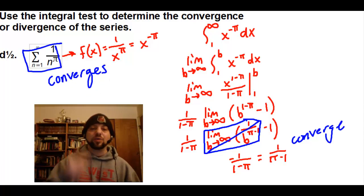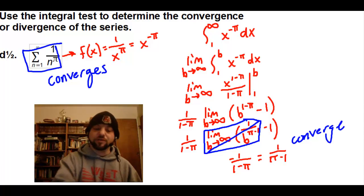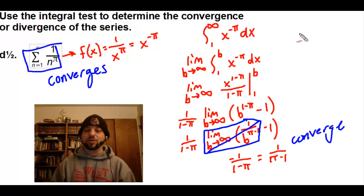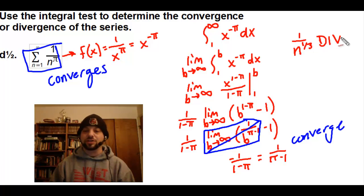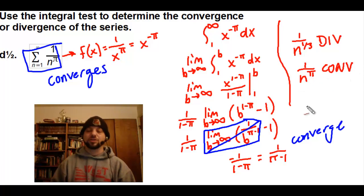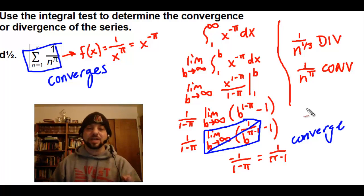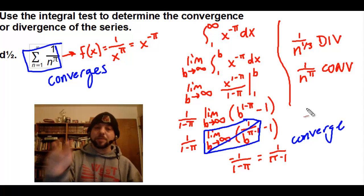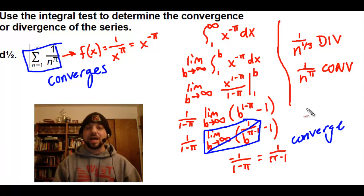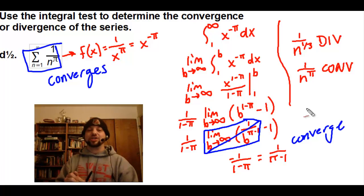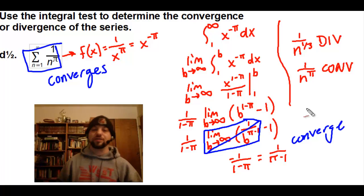This is really interesting — we've dealt with two series that look very similar. We found that 1 over n to the 1 third diverged, and 1 over n to the pi converged. In our next couple of examples, we're going to look at the p-series, which is represented by both of these series, and determine a shortcut to find out whether a series of this form converges or diverges.